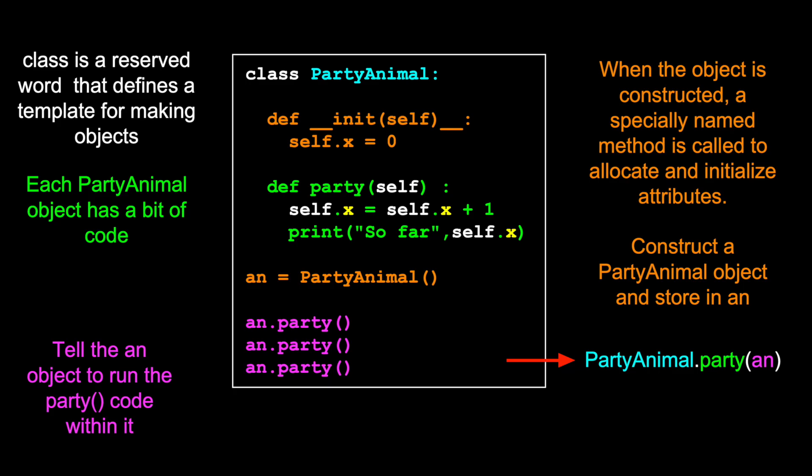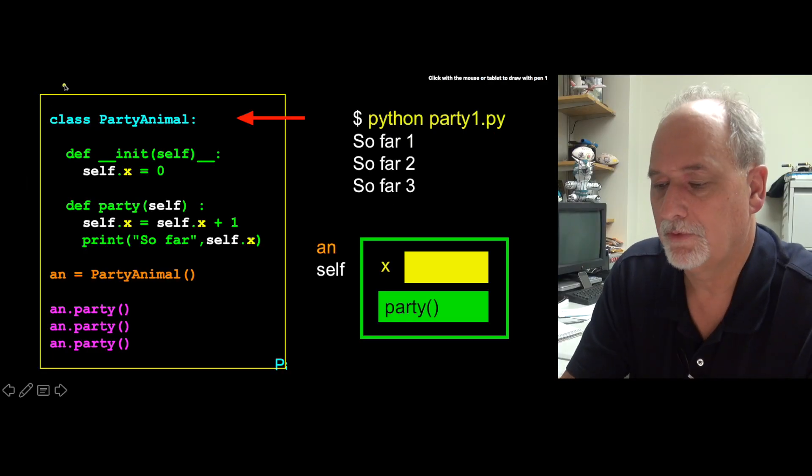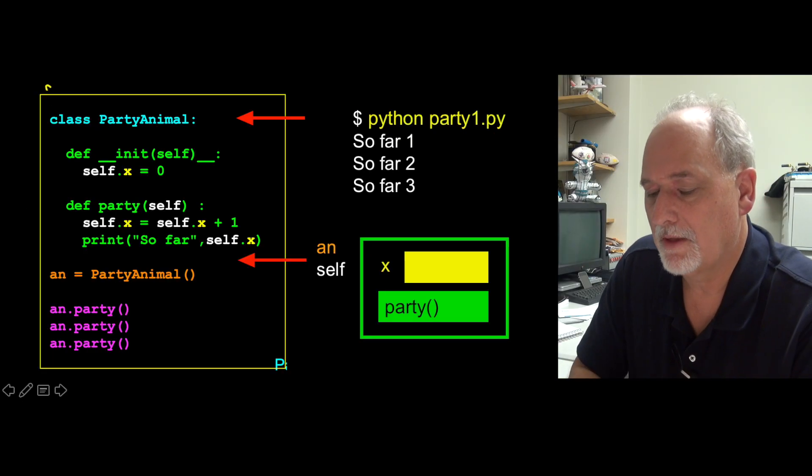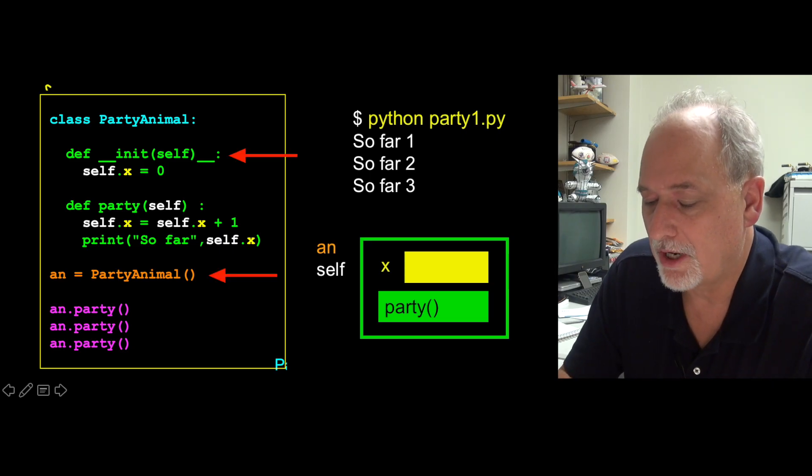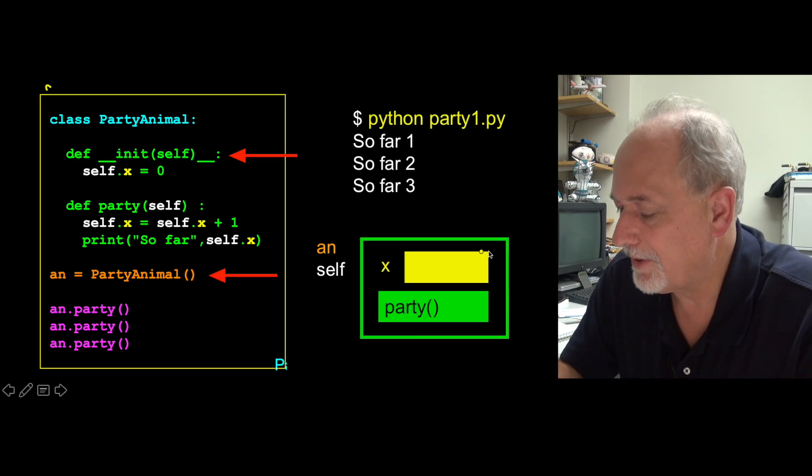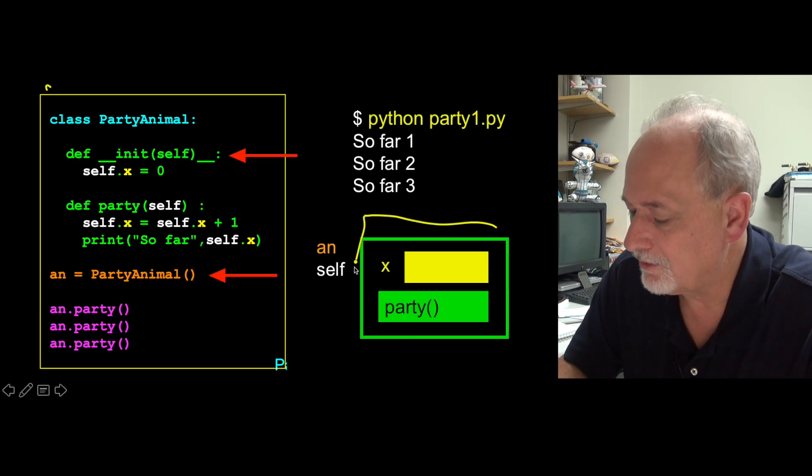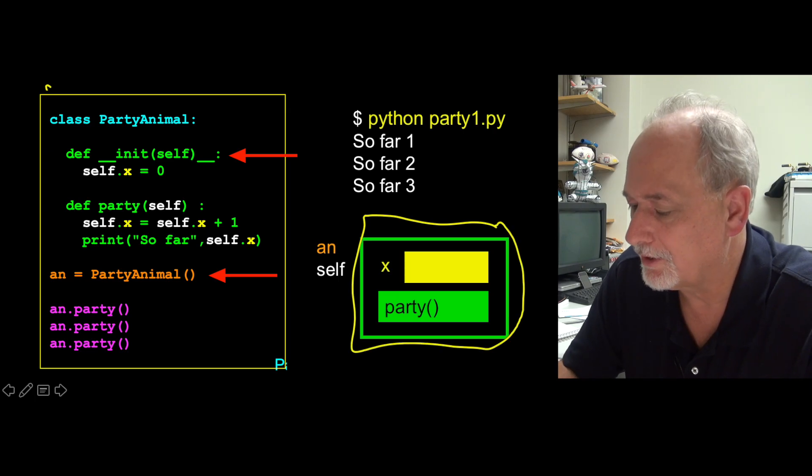So if we watch how this executes, it starts up here. It just defines it. And then we construct it. And that's what basically constructing it. We know how to construct it because we look at the class and we make a variable x, we make some code party.